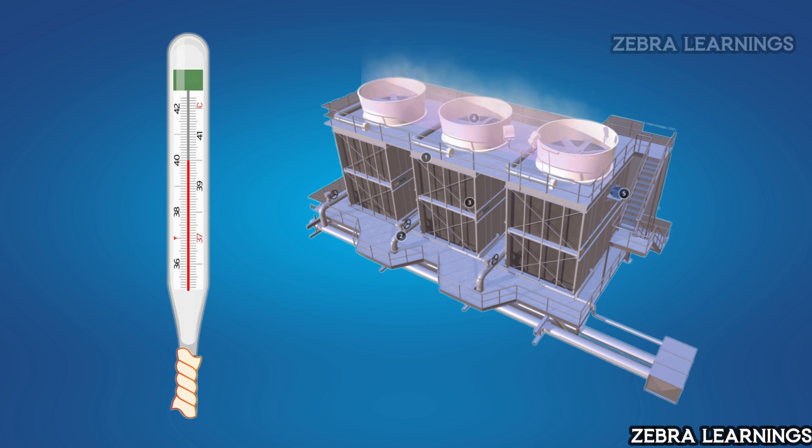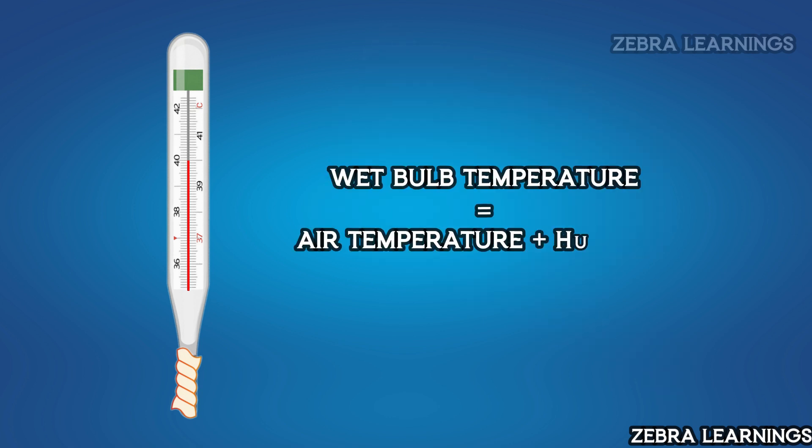However, we use wet bulb temperature where evaporation takes place. Wet bulb temperature is the temperature measured by considering both air temperature and humidity.